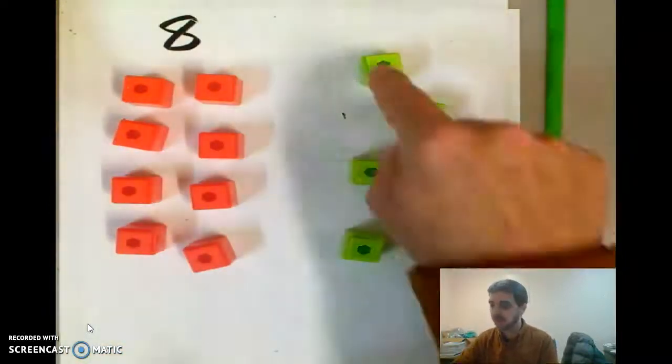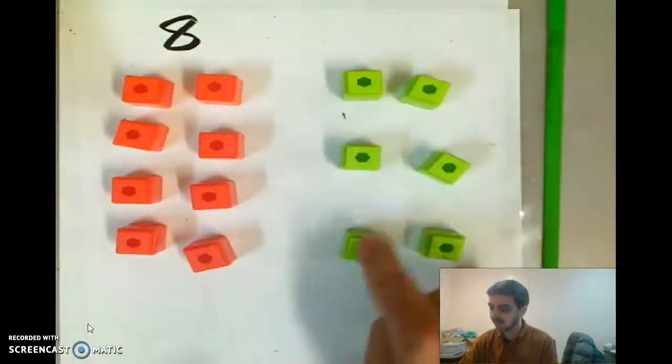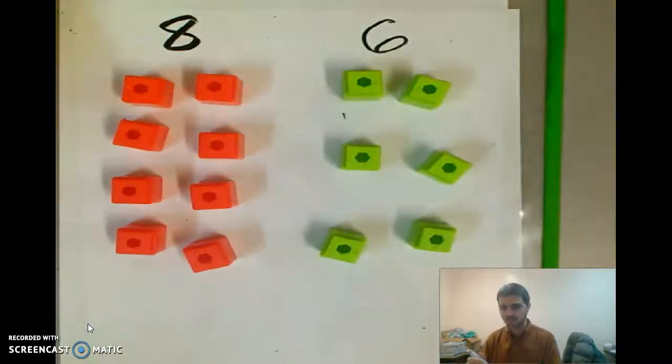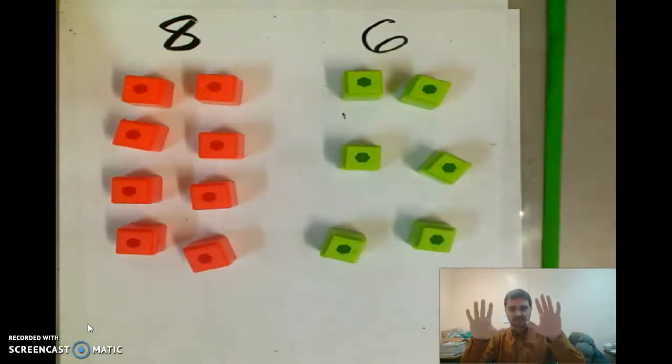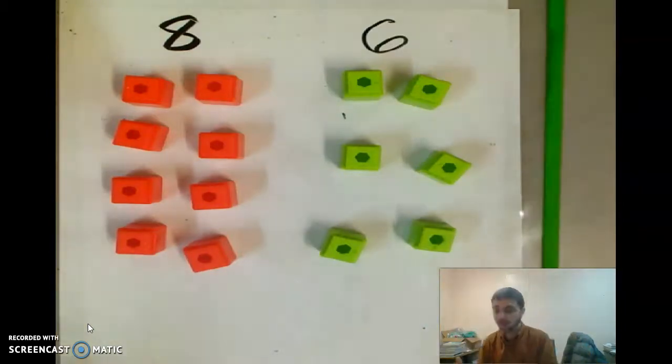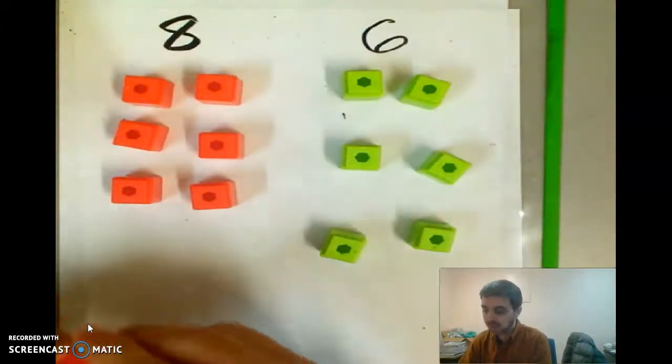And then over here we have one, two, three, four, five, six. So which one is more? Do we know? Well, eight does come after six. So if this is six, then this is eight, right? So six, seven, eight. So eight comes after six, so it should be more. But we're going to build our tower just to make sure.